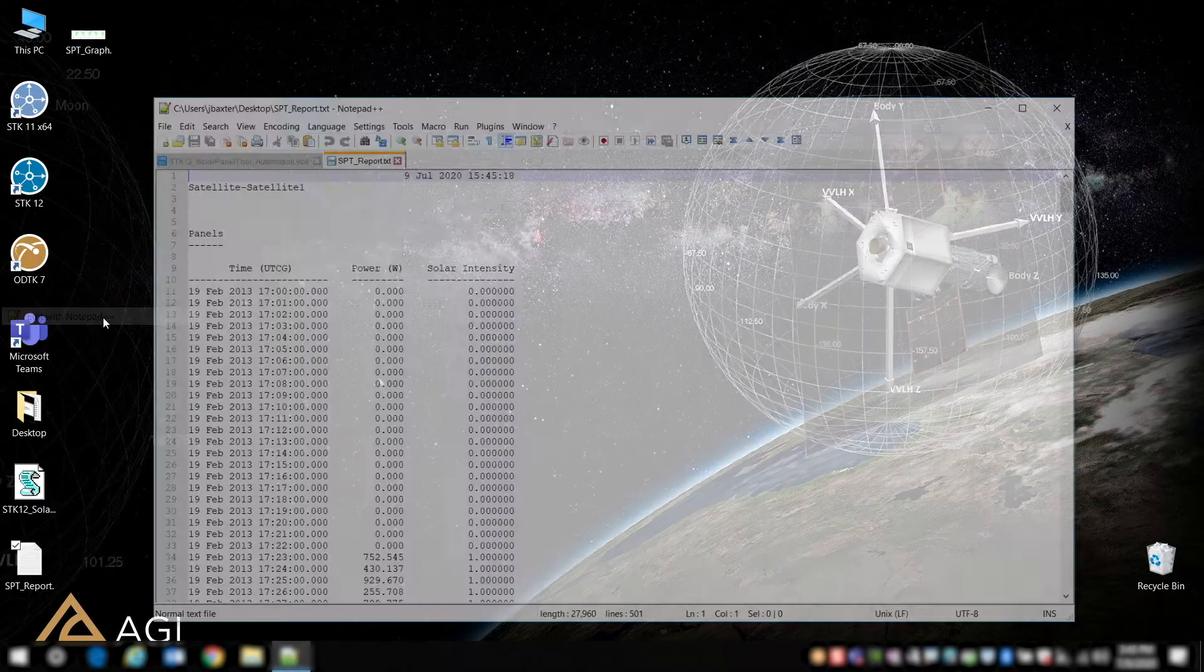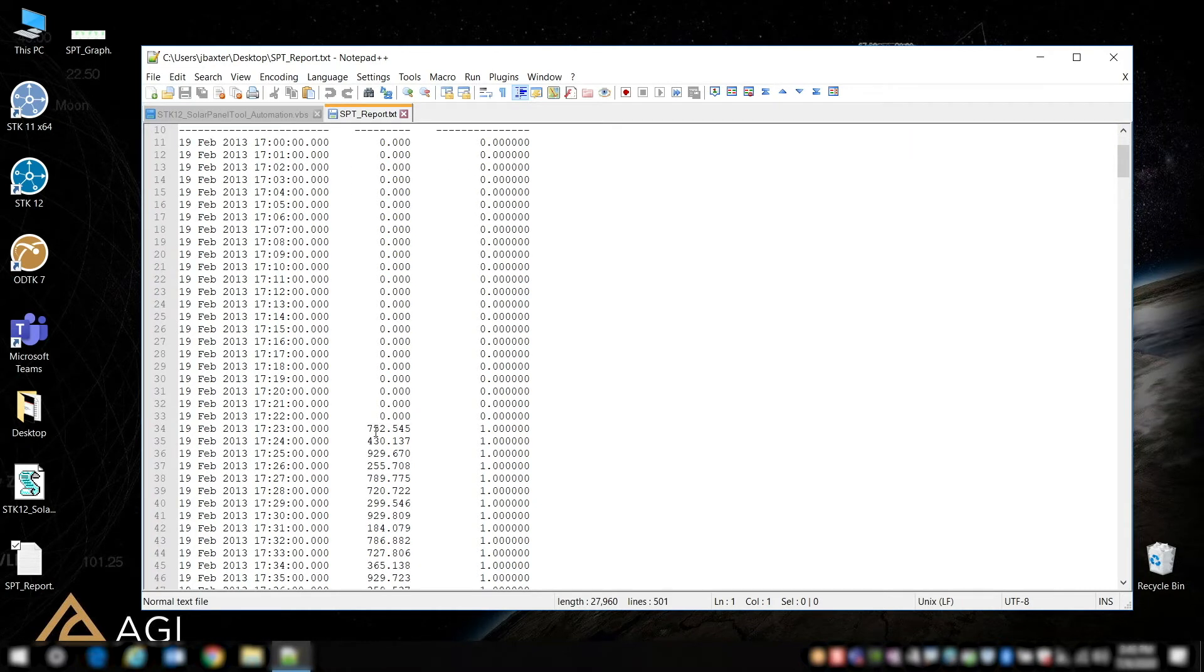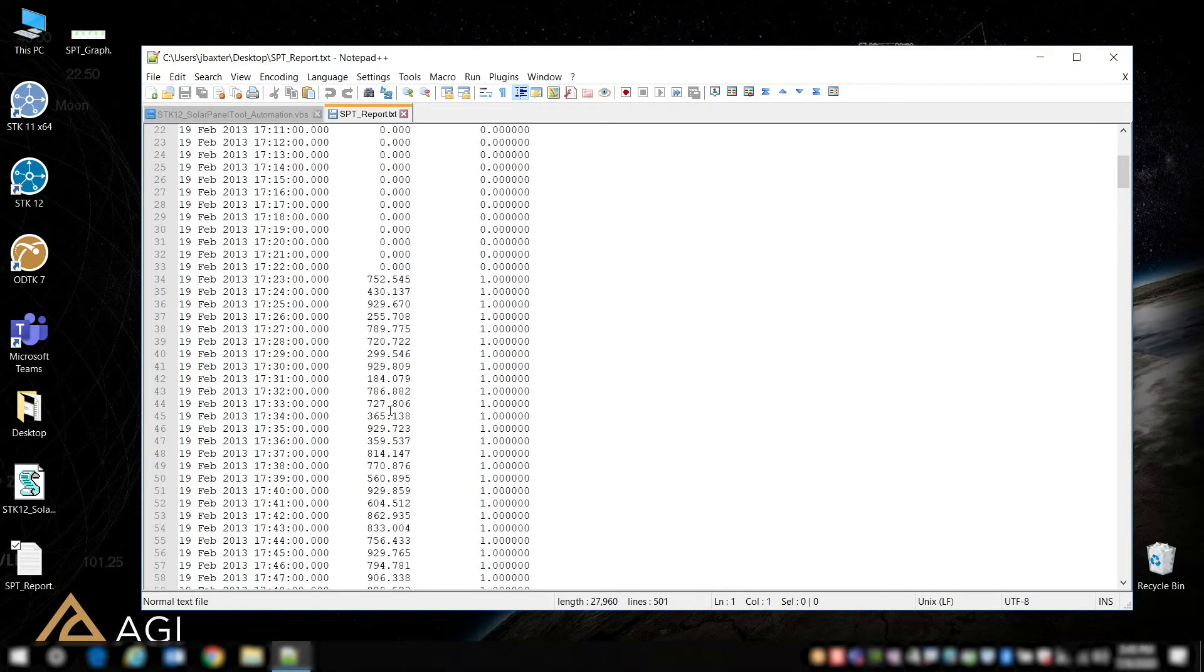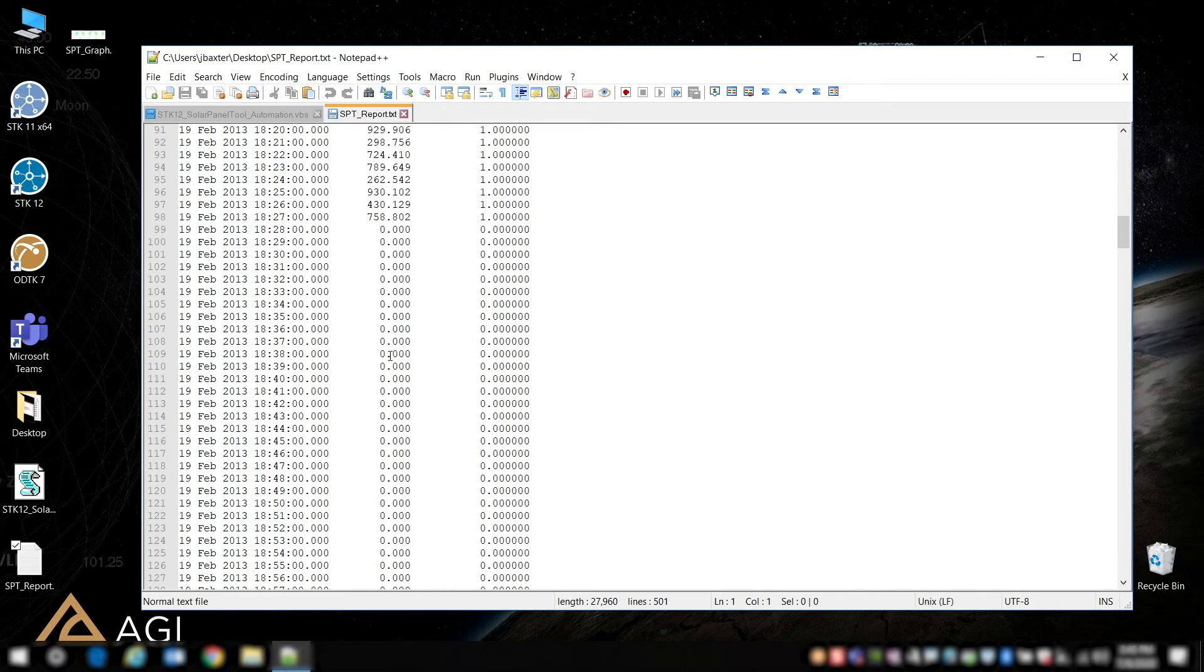So the first one, I'll go ahead and open up here. This is a report, just a time history report of the power over time. You can see some of those parameters like the solar intensity. So when it's zero, it's when the satellite's in eclipse. And you see it starts collecting here at this time, and depending on the attitude of the satellite and the relative orientation of the sun, you'll have different values.